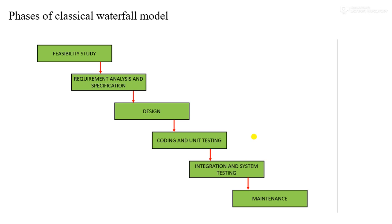This is the diagrammatic representation of the classical waterfall model. It divides the entire life cycle into six different phases, starting from feasibility study to maintenance. This model is also known as the sequential model, because only after completion of the previous phase can we move to the next phase. For example, after completion of feasibility study, then only we can perform requirement analysis and specification. Similarly, after requirement analysis comes design, then coding and unit testing, then integration and system testing, and finally maintenance.